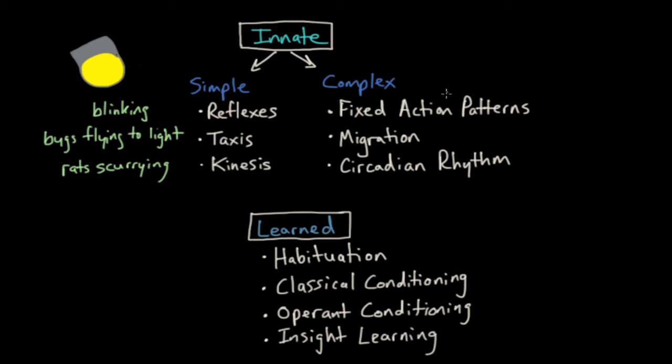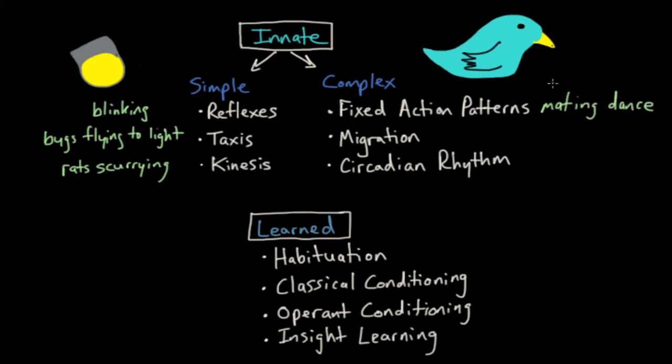When it comes to complex behaviors, you have things like fixed action patterns, migration, and circadian rhythms. So for complex behaviors, let's put this in the context of a bird. So here we have our bird. A fixed action pattern is a more complex type of innate behavior. It's an instinct. But this complex behavior is already ingrained in the animal. A really common example of fixed action pattern is like a mating dance. You've probably heard of birds that perform these mating dances to attract mates. These dances are just fixed types of behaviors that they already know how to do that attract a mate.